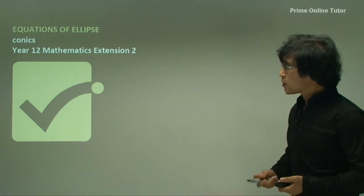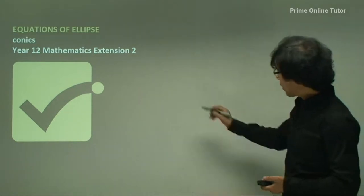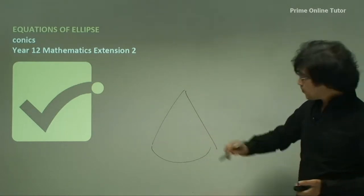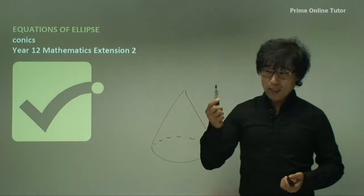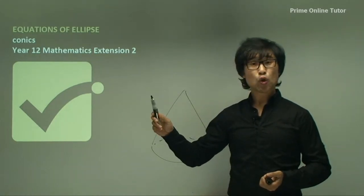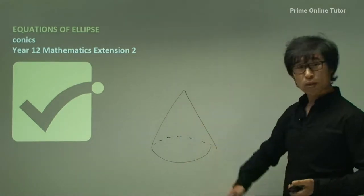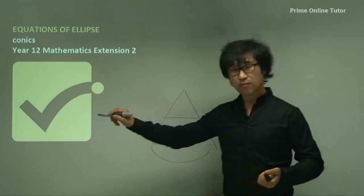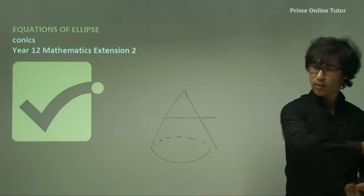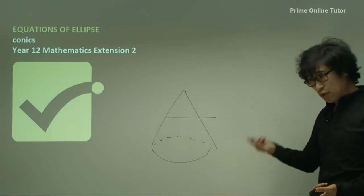The word 'conics' sounds like it's coming from the word 'cone.' Have a look at this — this is a cone. We have a very sharp sword, and we're going to make a strong slash to cut this cone in half. What do you think about the shape being made by the slash of the very sharp sword?